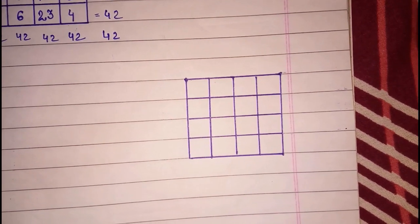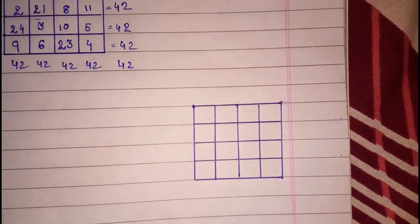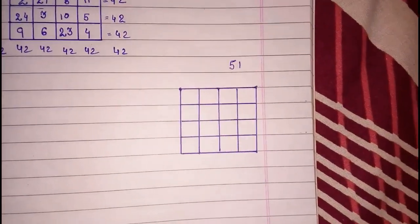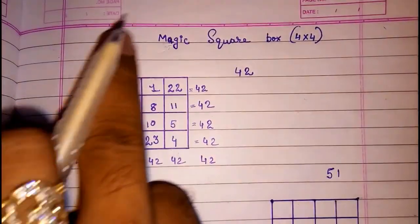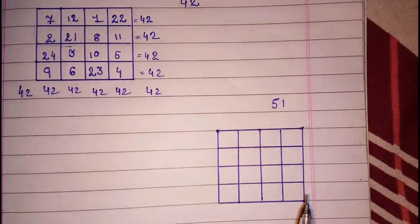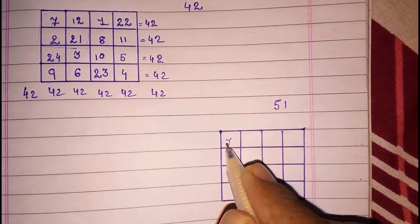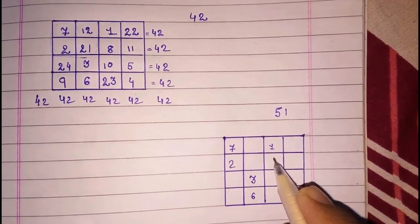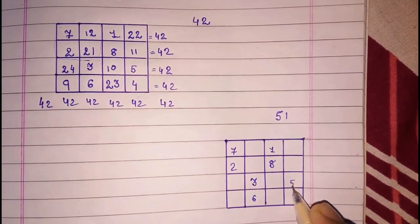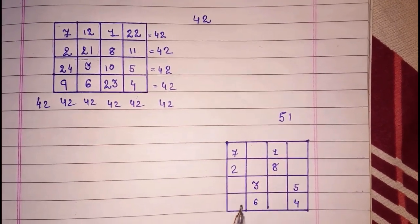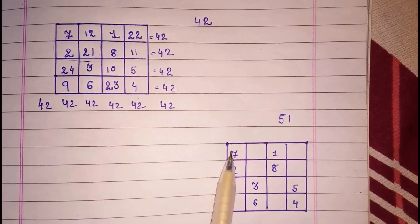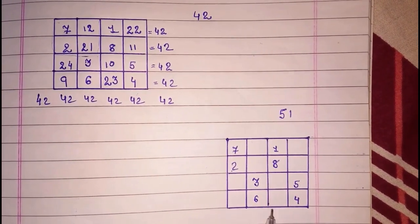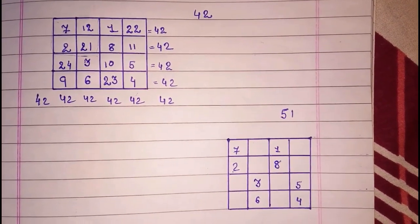The sum of these four boxes is also 42, this four boxes also 42, this four boxes 42, again 42. Now I am going to explain how I had done this so quickly. Suppose we have to take 51 — a few numbers are fixed that you have to keep in mind. If you look carefully you will see that few numbers will be the same. First you have to remember these numbers: 7 and 2 — 7 plus 2 equals 9, then 3 and 6 — also 9, then 1 and 8 — also 9, and 5 and 4 — also 9.